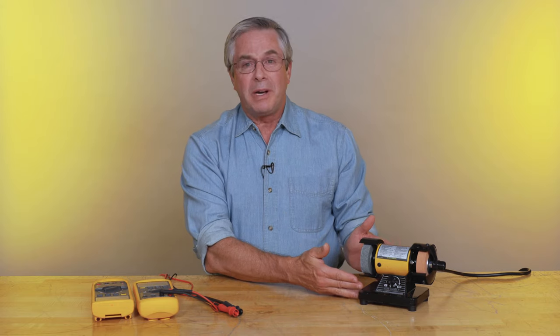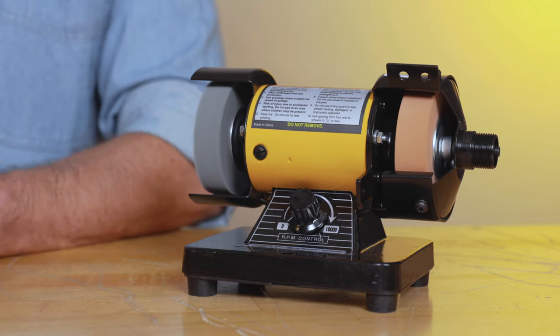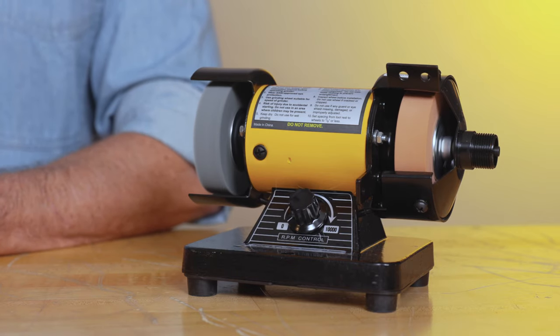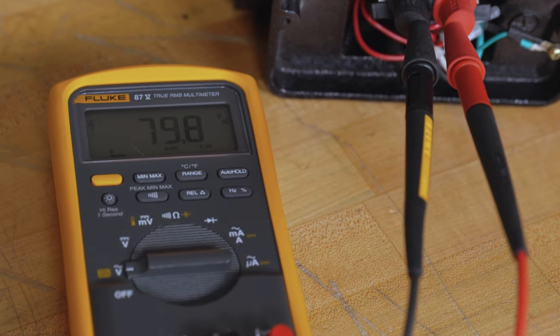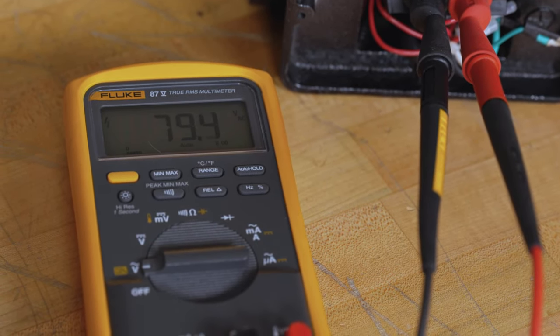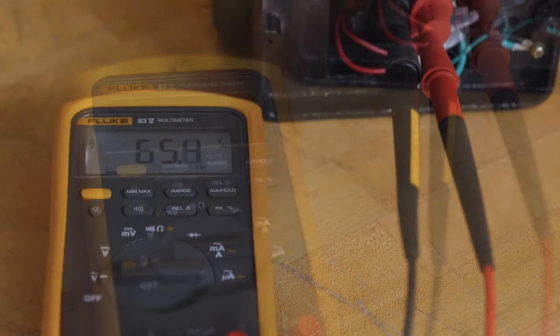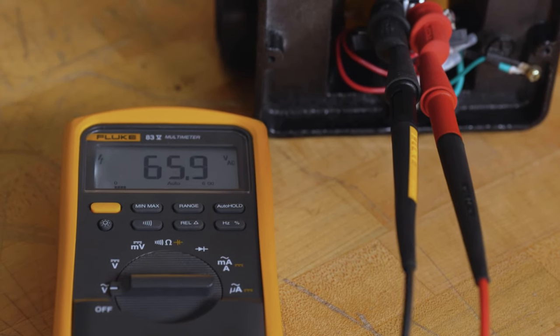This portable grinder has a control that adjusts the motor speed. When we measure the output voltage with a true RMS meter, we see 79 volts AC, while the same measurement taken with an averaging meter shows 65 volts AC, an error of 18%.